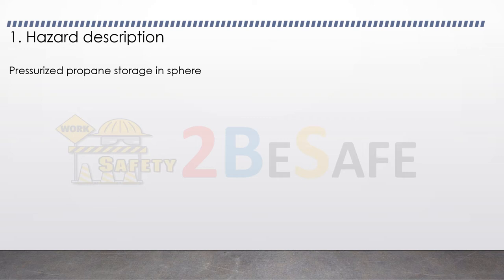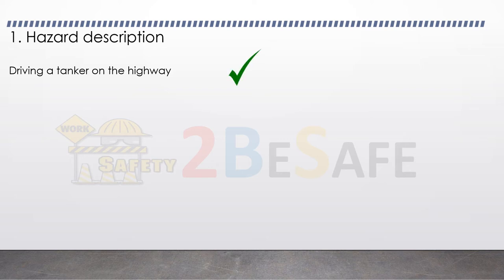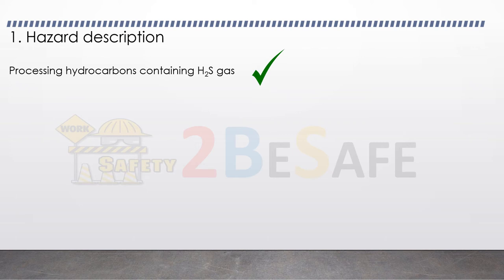These are some examples of hazard descriptions. First example: pressurized propane storage in a sphere — this is a good hazard description, as the normal operational state is defined and the volume in the sphere will be known to those using the Bowtie. Driving a tanker on the highway is also a good description — it is a normal requirement to get from A to B, and while not a problem in itself, it does have the potential for loss of control. Processing hydrocarbons containing H2S gas is a good example: hydrocarbons have the usual flammable properties, and the H2S gas is an additional toxic hazard pointing to wider safety issues. Since these hazards are different, this might justify two Bowties — one focusing on flammable hazards and one on toxic hazards.